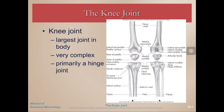The knee joint is the largest joint in the body, believe it or not, and it is very complex. Don't let the fact that it's a hinge joint fool you — it does have some complexities. It is primarily a hinge joint, but there are some other movements that go on at the knee other than purely hinging.